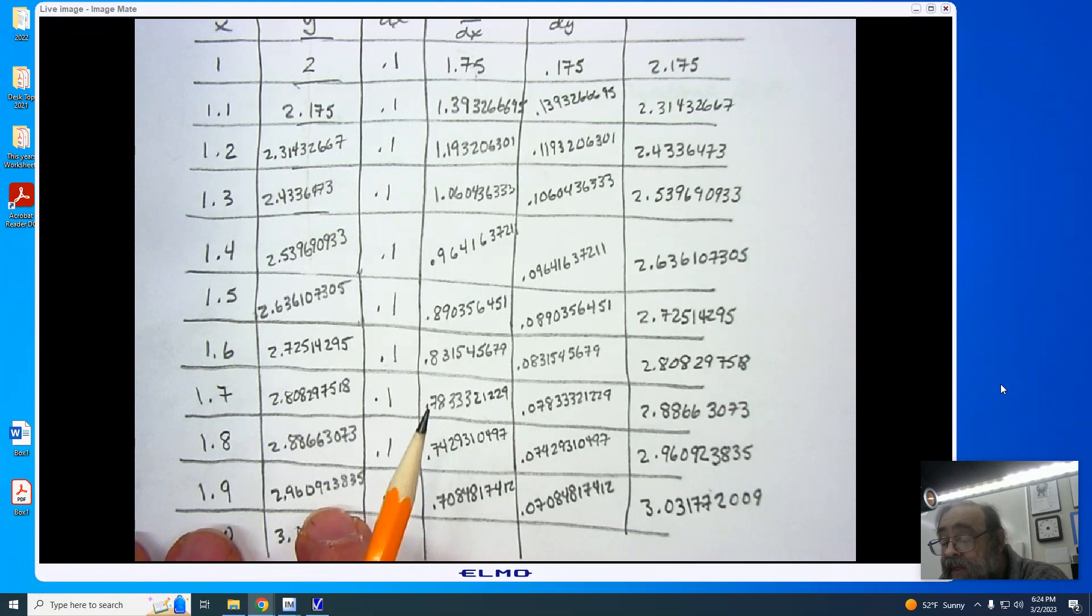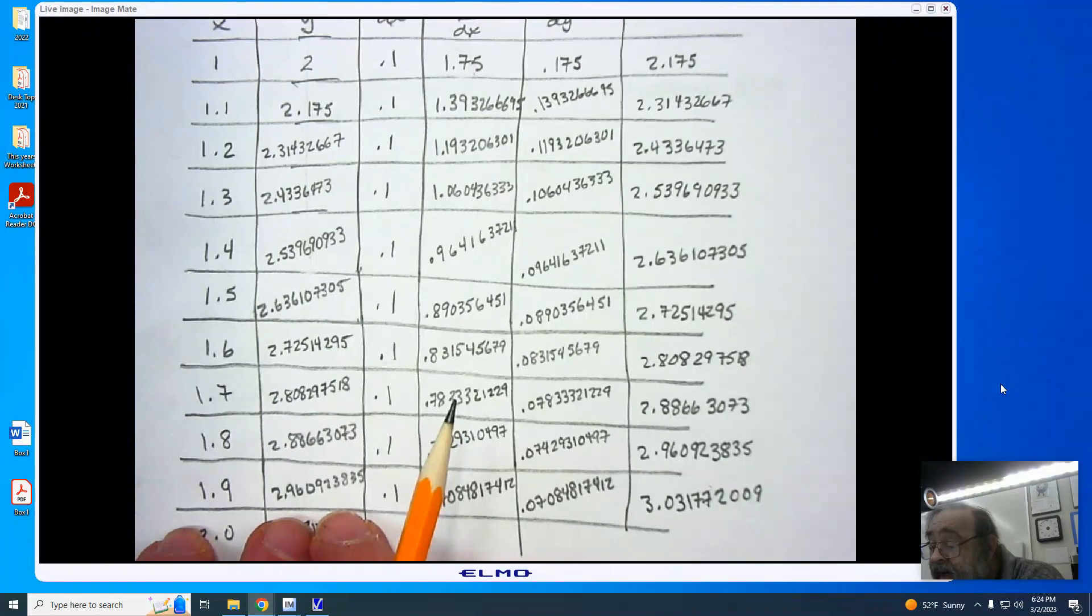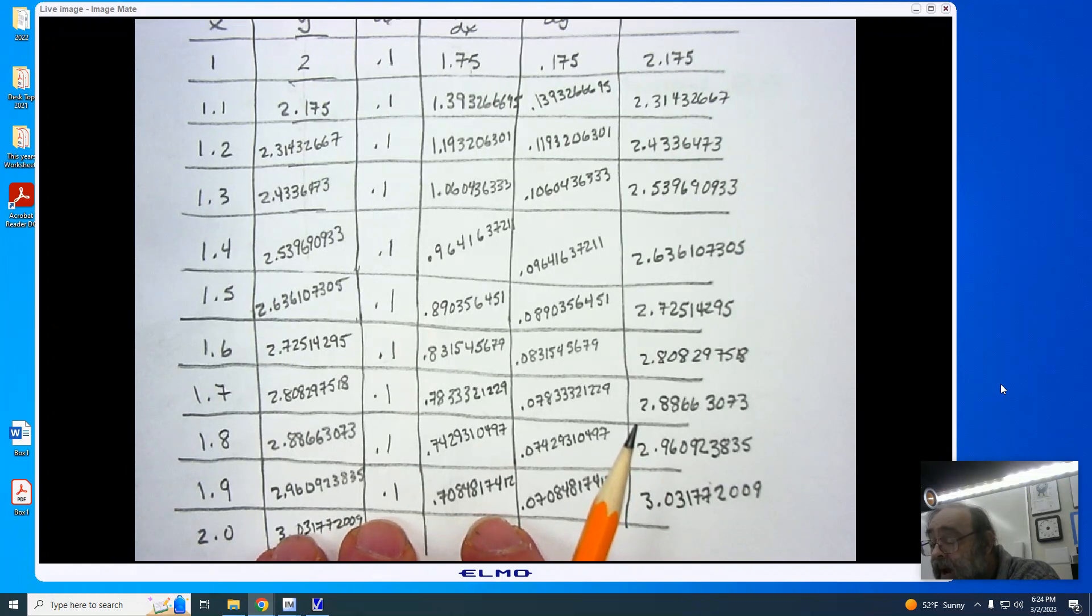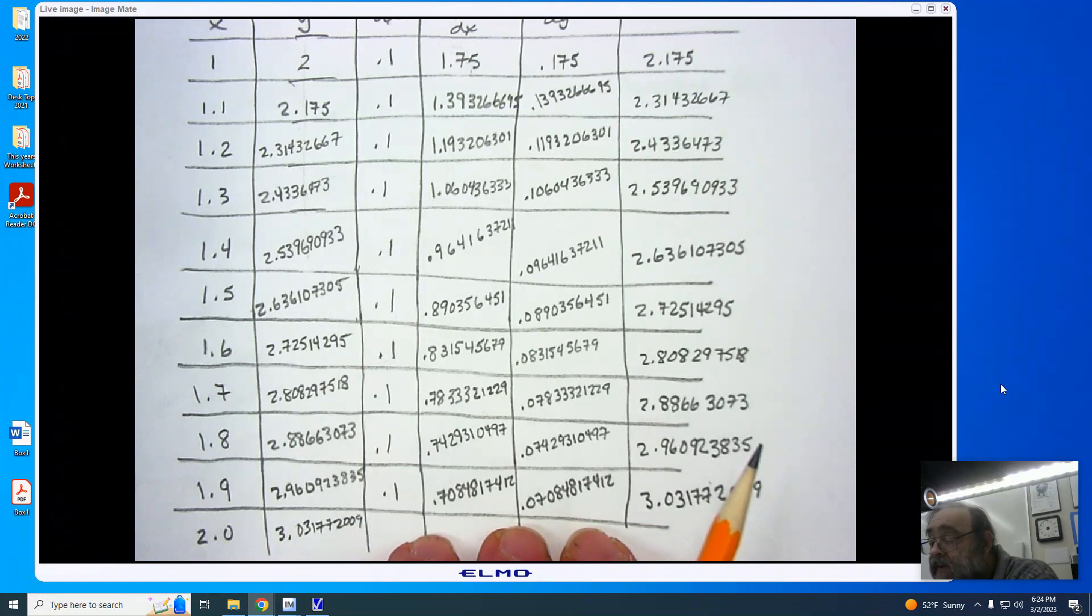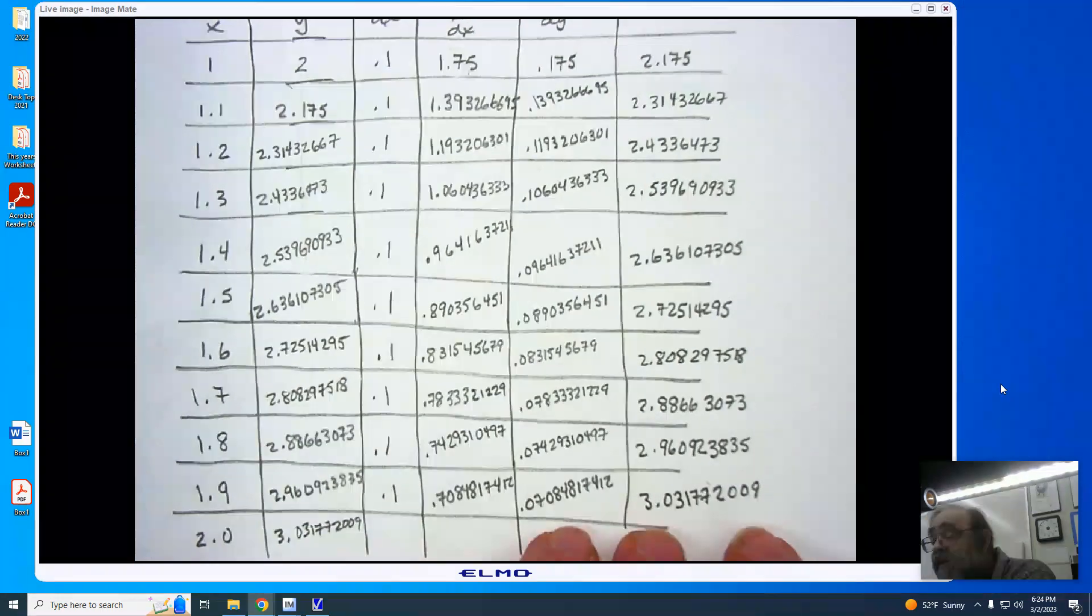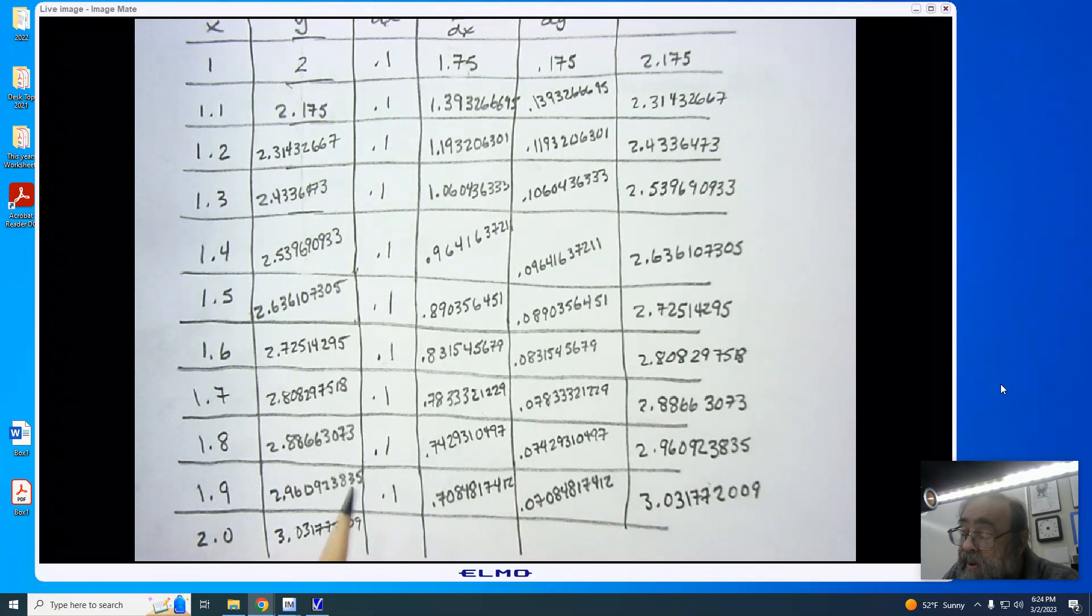I now plug in 1.8 into the equation for the x, and 2.88663073 for the y. My dy/dx becomes 0.7429310497. Multiplying it by the 0.1 gives me 0.07429310497. I now add this value to the 2.88663073, and I end up with 2.960923835. I now put in 1.9 for the x, 2.960923835 for my y value, and dy/dx is 0.7084817412, which I now multiply by the 0.1. This gives me 0.07084817412, which I add to the 2.960923835, and I arrive at the answer that we are seeking. This answer is 3.031772009, and this is my approximate value.